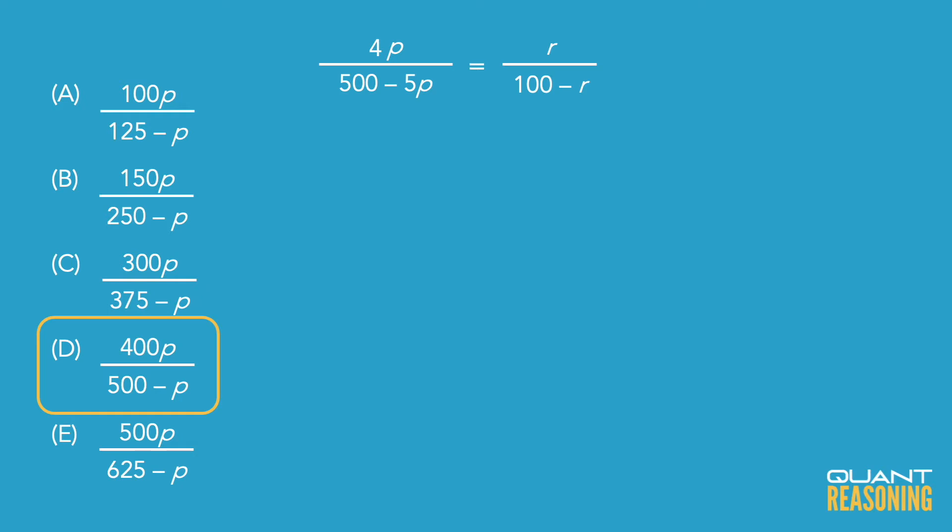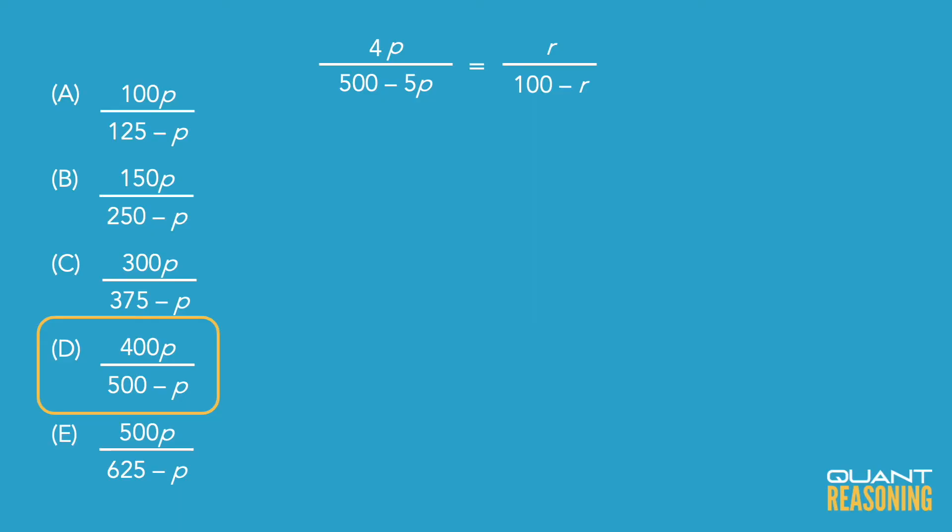For our purposes, let's just finish off the algebra here just to make sure that we know how to do that. Since I'm trying to solve for R, I want to make sure that all of my R's, anything that has R in it, is all on the same side. And anything that doesn't have R in it is on the other side of the equal sign.